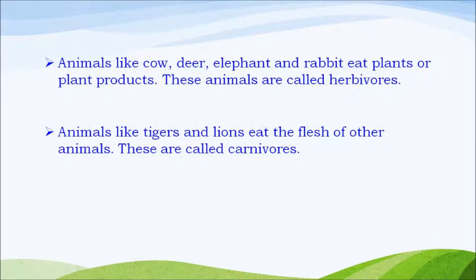Animals like cow, deer, elephant and rabbit eat plants or plant products. These animals are called herbivores. Animals like tigers and lions eat the flesh of other animals. These animals are called carnivores.